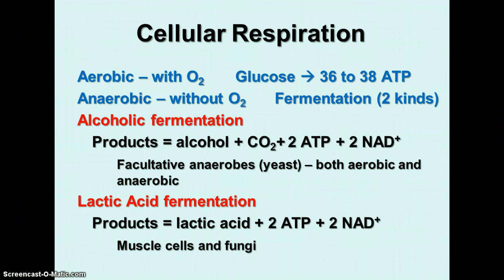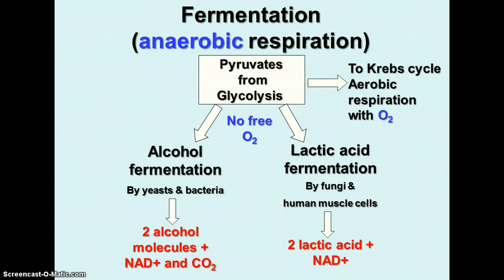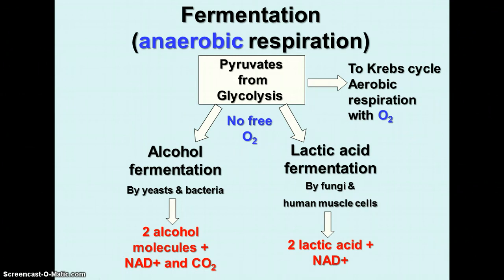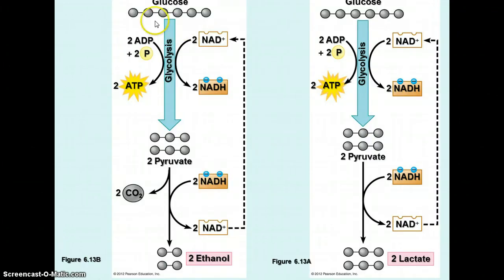Here's the diagram that shows fermentation. If oxygen is present, the pyruvates go to the Krebs cycle. If there is no free oxygen, one of two paths can occur depending on the organism: alcoholic fermentation by yeast or bacteria to produce alcohol and carbon dioxide, or lactic acid fermentation by fungi and muscle cells to produce lactic acid and NAD+. Both processes produce a little bit of ATP — enough for the cell to get by until oxygen is available again.